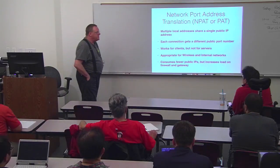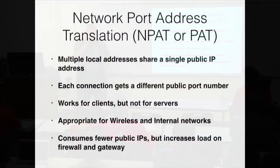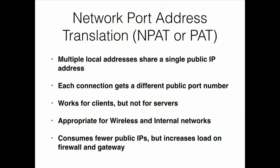What is almost always used instead is port address translation — this is what everybody has at home. Not only do you change the address, you also change the port number of the packets. Now you can have many machines sharing one public IP, each assigned random port numbers. It looks to the internet as if one machine has ten browser windows open on different ports. It works, although it means your entire enterprise is limited to 64,000 ports. That's enough for most purposes unless someone starts using BitTorrent, which is one reason everybody blocks it — one person downloading by BitTorrent typically uses one or two hundred connections.